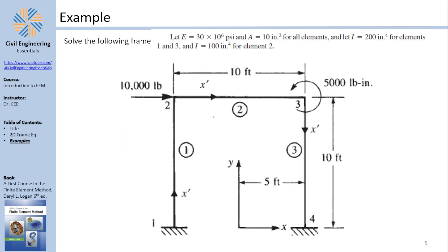Here is an example: a frame made of three elements, each with a length of 10 feet, with some applied forces and moments. There is a force in X of 10,000 pounds at node 2, and a positive counterclockwise moment of 5,000 at node 3. The moment of inertia is 200 for elements 1 and 3, and 100 for element 2.